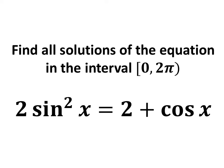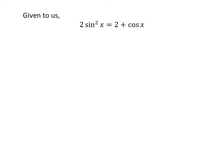In this video, we will learn to find all solutions of the equation 2 times sine squared of x is equal to 2 plus cosine of x. Given to us: 2 times sine squared of x is equal to 2 plus cosine of x.